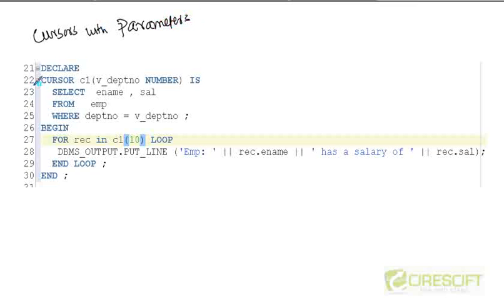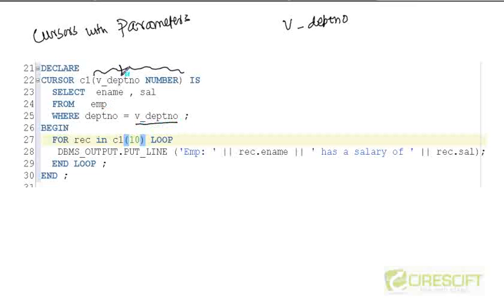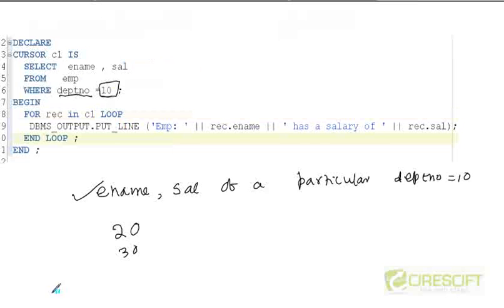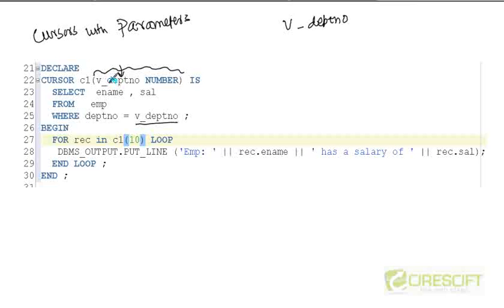Here's a simple example where I rewrote that piece of code. If you see the old code it was just cursor C1. But here I introduce a parameter — the parameter name is v_department_number, and the data type is NUMBER. Then I declare SELECT ename, sal FROM emp WHERE department number is equal to whatever parameter I give. That means at this time we do not know what the value of department number is. In the previous example we knew during declaration time what the department number was, but in this case we do not know — we just define it as a parameter v_department_number.